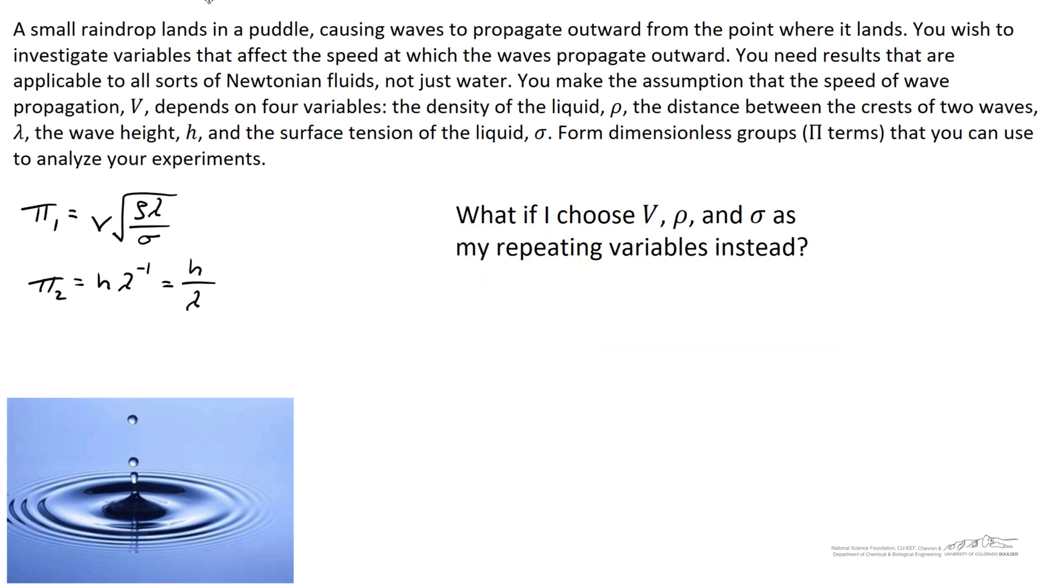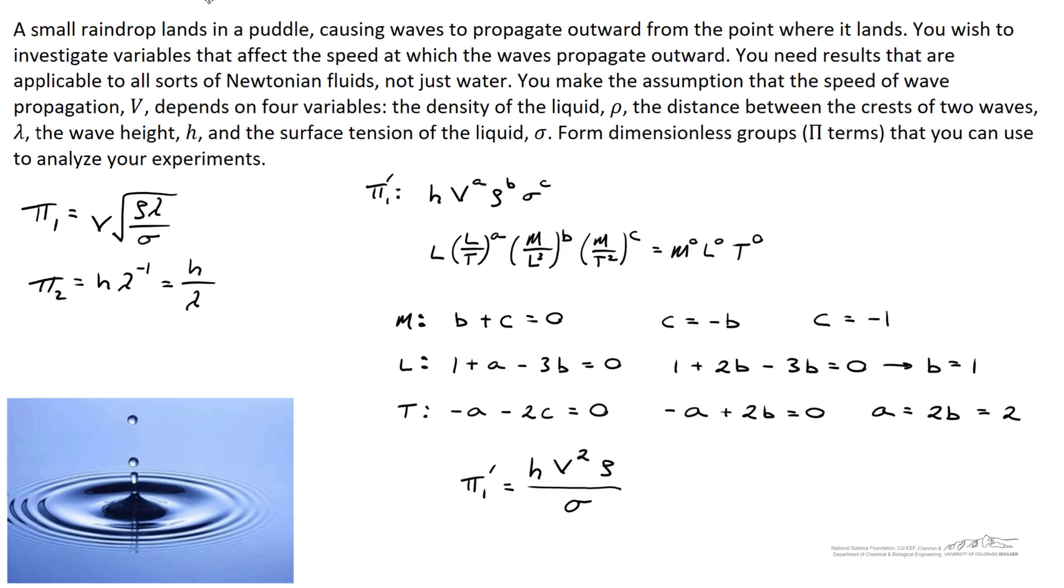Well, remember when I said it doesn't matter what you choose as your repeating variables? Let's figure out what happens if you choose v, rho, and sigma as your repeating variables instead. Do we still come up with pi terms when we do that? Well, yes, you do come up with pi terms. They'll be different.